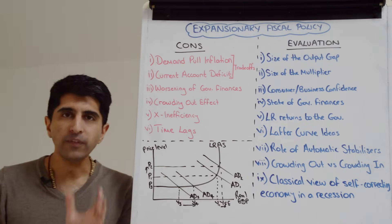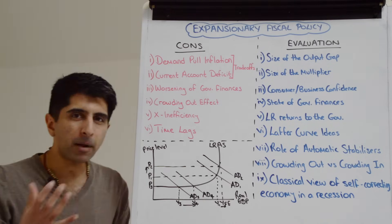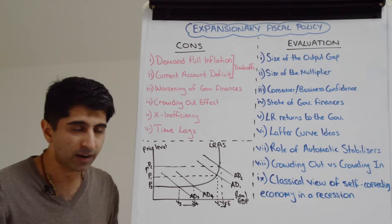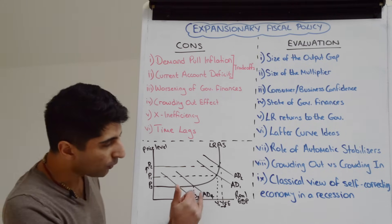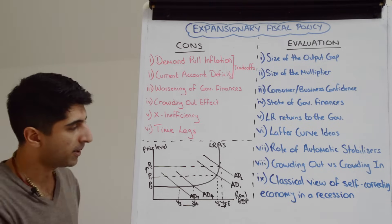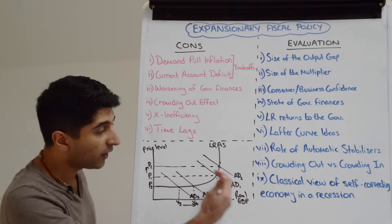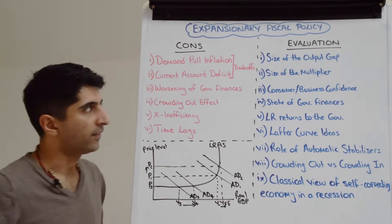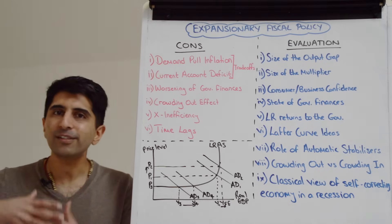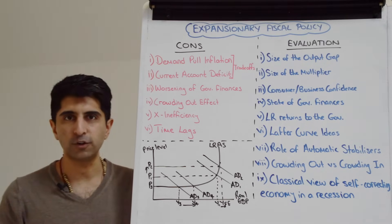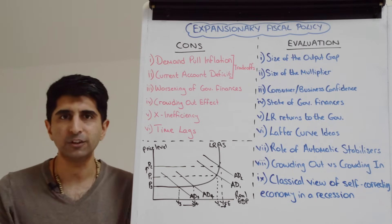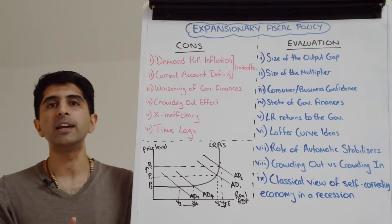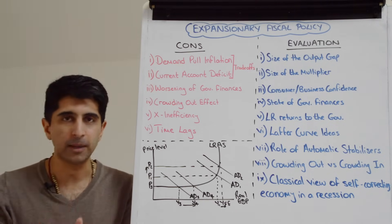The effectiveness also depends on the size of the multiplier. If the multiplier value is large, the impact of expansionary fiscal policy is likely to be greater — further rounds of spending and income growth could push aggregate demand well beyond the initial shift, magnifying the impact on growth, though with a greater risk of demand-pull inflation. A large multiplier also means less need for very heavy expansionary fiscal policy, reducing the strain on government finances.